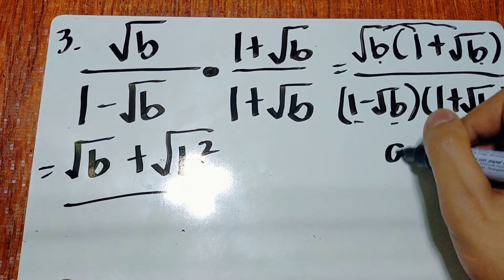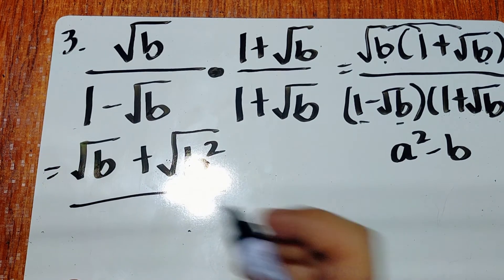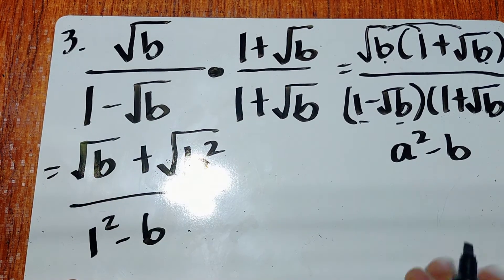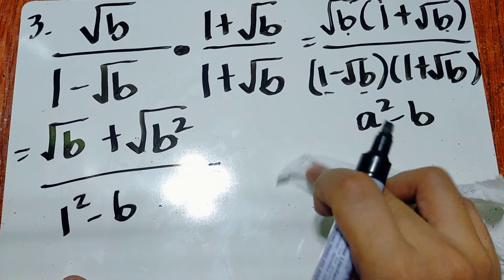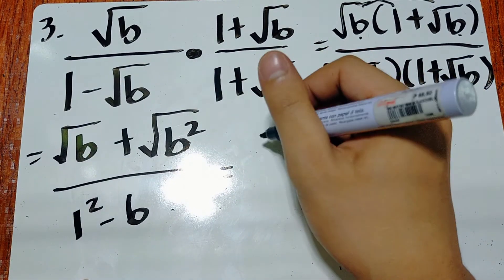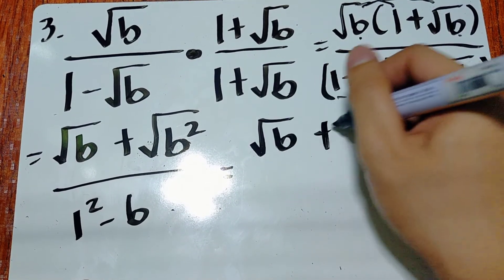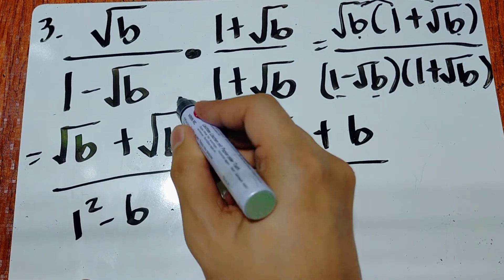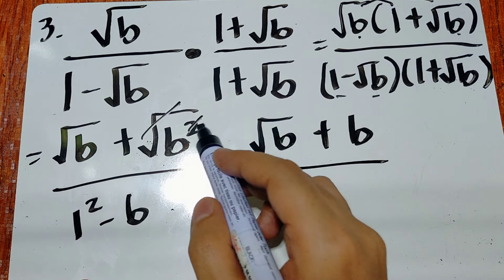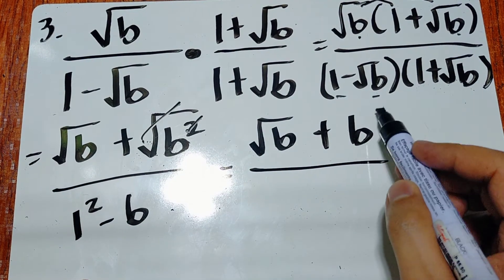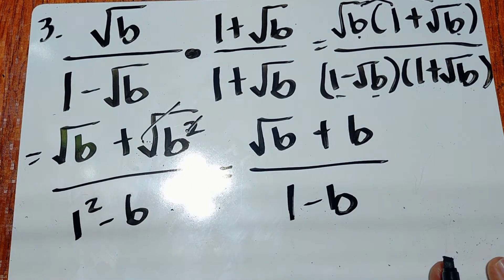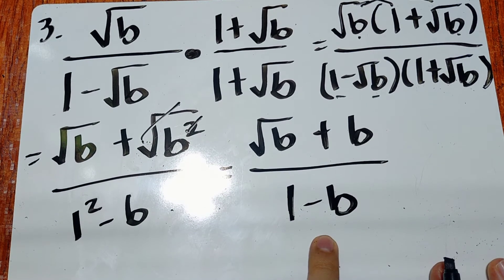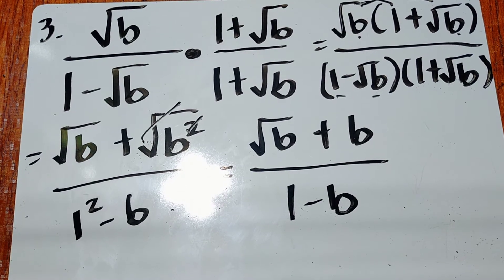For the denominator, since only one term has a radical, we use a squared minus b, giving 1 squared minus b, which equals 1 minus b. Simplifying: the square root of b squared becomes b (since the power 2 divided by 2 equals 1). The final answer is square root of b plus b over 1 minus b.